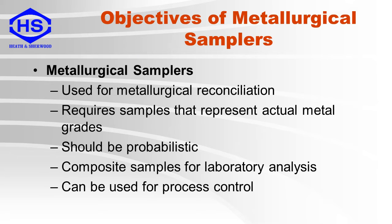Metallurgical samplers are used for metallurgical reconciliation. They require samples that represent actual metal grades. They should be probabilistic, meaning that every particle from the sample lot should have an equal probability of becoming part of the sample. These samplers produce composite samples for laboratory analysis, and they can also be used for process control.